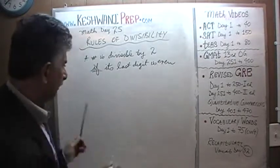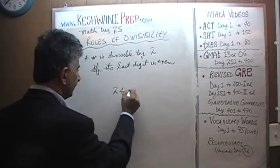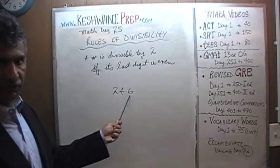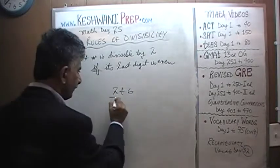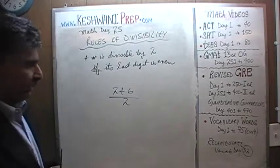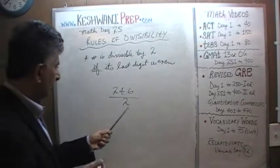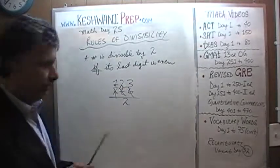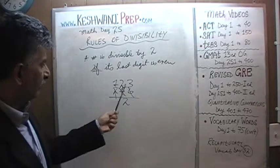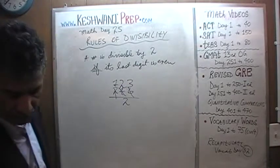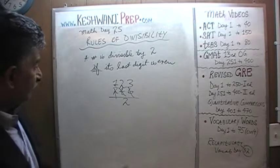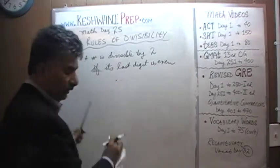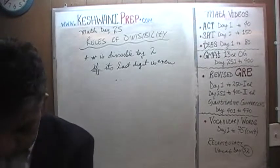For example, 246 ends in a 6, and because it ends in a 6 which is an even number, this number is divisible by 2. 246 divided by 2 is 123. But all the digits do not need to be even — only the last digit matters.